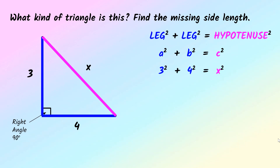Three squared plus four squared equals X squared. Now I'm going to evaluate the squares. Three squared is 9, four squared is 16. Here we need to combine like terms — 9 and 16 can be added, so we get 25 equals X squared. But I don't want to know what X squared is; I want to know what X is. To undo the square, the inverse operation of squaring is square rooting. So we take the square root of both sides. The square root undoes the square, leaving X. The square root of 25 is 5, because 5 squared is 25.